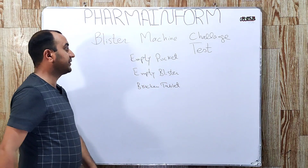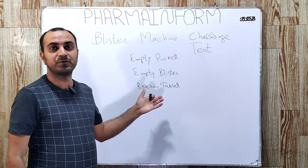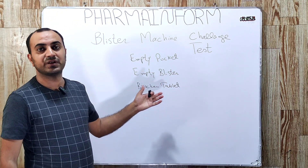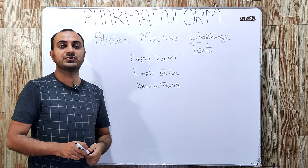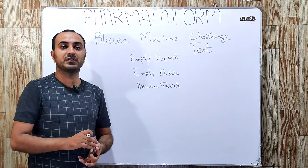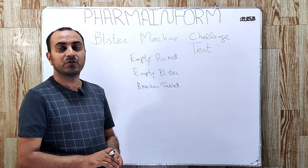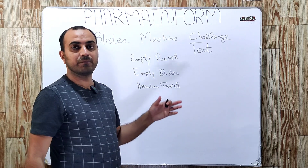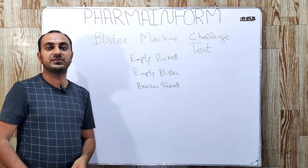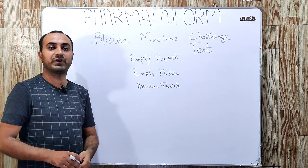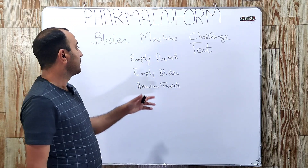How are these challenge tests performed? Basically, advanced blister machines have an installed camera which works by observing every blister to ensure product quality, and we are directly challenging the effectiveness of this inspection camera.